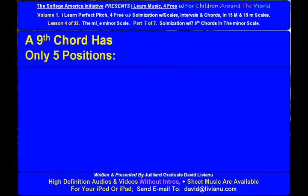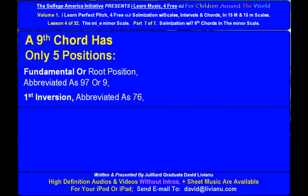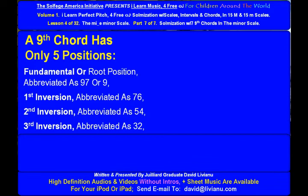A 9th chord has only 5 positions. Fundamental or root position abbreviated as 9, 7, or 9. 1st inversion abbreviated as 7-6. 2nd inversion abbreviated as 5-4. 3rd inversion abbreviated as 3-2. And 4th inversion abbreviated as 4-2, which is rarely used.